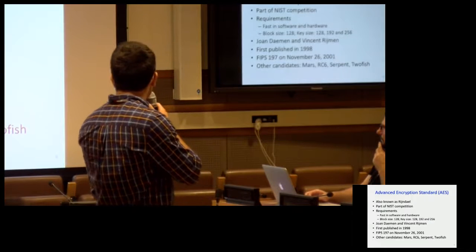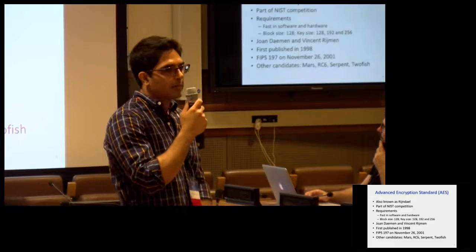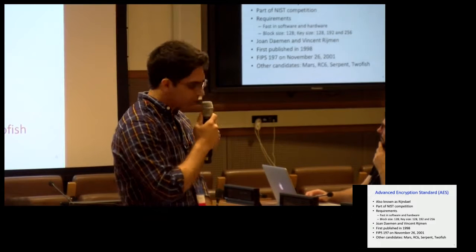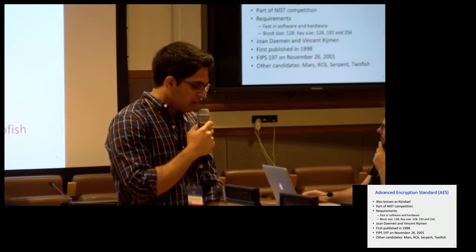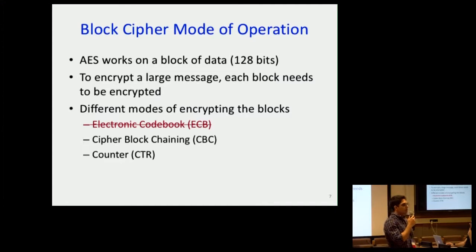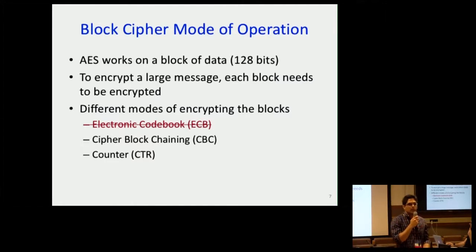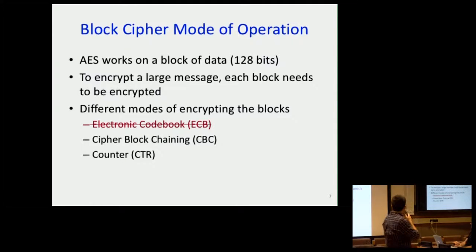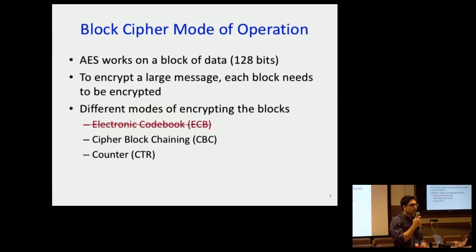The other candidates were Mars, RC6, Serpent, and TwoFish — they are implemented in the real world, but no one uses them much. AES is what's called a block cipher, which means it operates on a block of data that is 128 bits. Your data should be 128 bits and it just works on that block, transforming it into something gibberish, and later on you can convert that back to something meaningful. If you have a message longer than 128 bits, you just need to encrypt each block and combine them together.